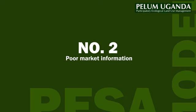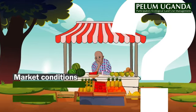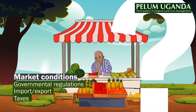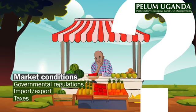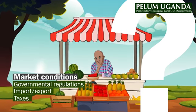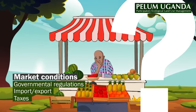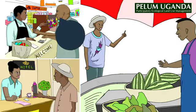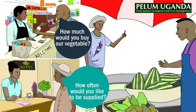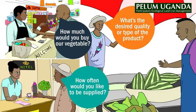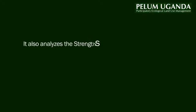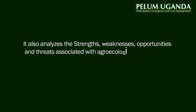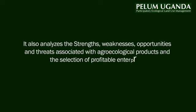Number two: poor market information. Often, specific market conditions or other influencing factors are not known, and result in low prices and bad marketing. In module two, the PESA model builds the capacity of farmers to conduct market research and calculate profitability. It also analyzes the strengths, weaknesses, opportunities and threats associated with agroecological products and the selection of profitable enterprises.